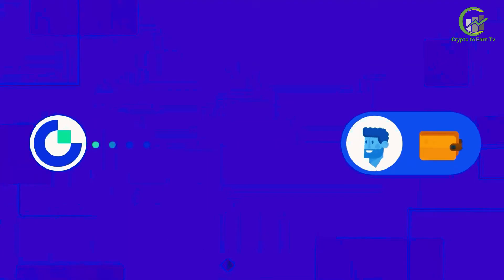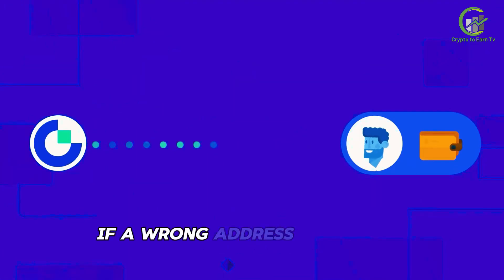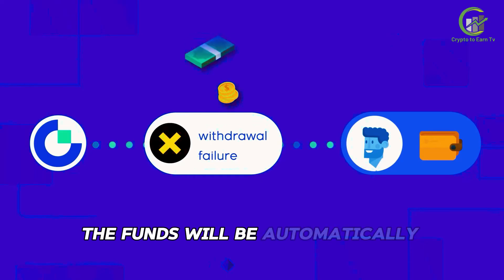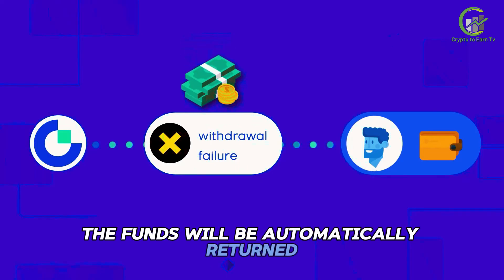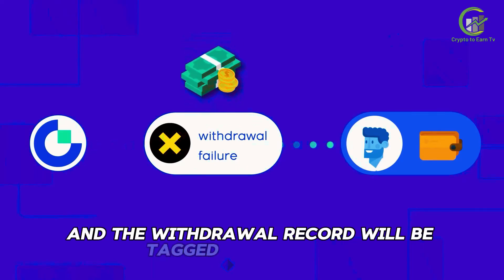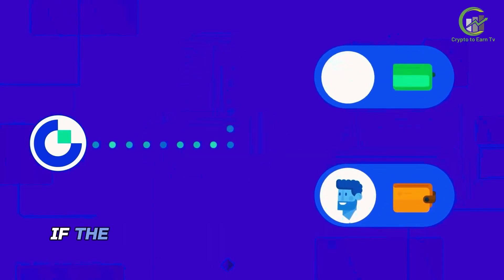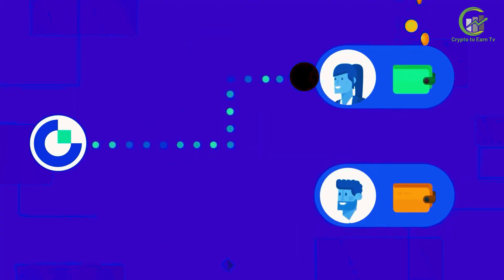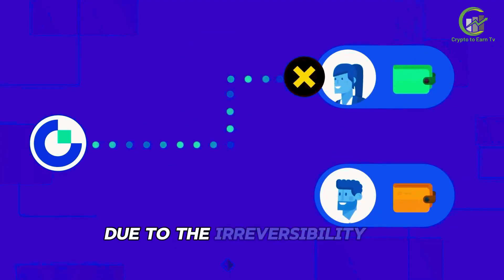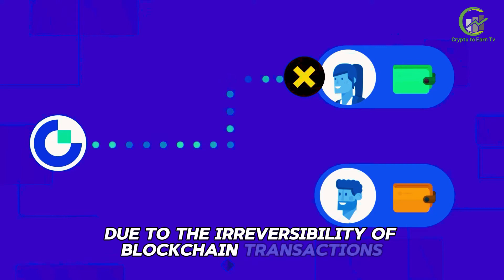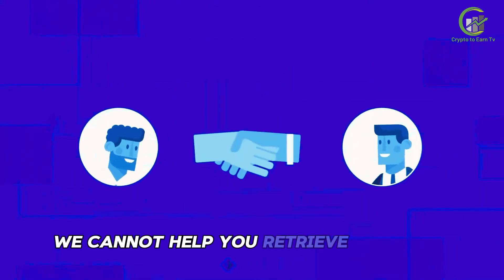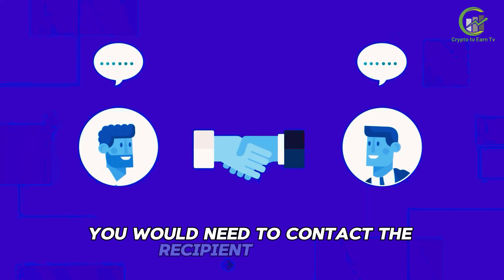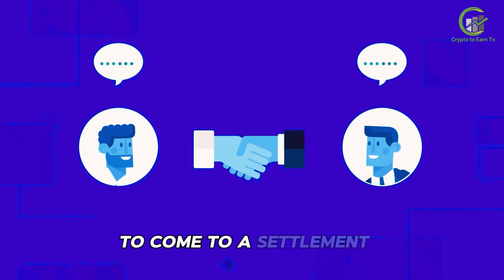Wrong address: If a wrong address led to the withdrawal failure, the funds will be automatically returned and the withdrawal record will be tagged as cancelled. If the withdrawal has been sent to the wrong address, due to the irreversibility of blockchain transactions, we cannot help you retrieve the funds. You would need to contact the recipient directly to come to a settlement.